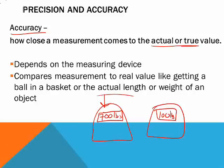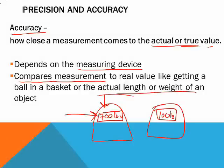So we're looking at accuracy as the true value. And again, it does depend on the measuring device. If you made this scale in fourth grade science class, well, you probably have a reason why you're not getting the true value. So what it does is it compares measurements to the real value, like getting a ball in a basket or the actual length or weight of an object.